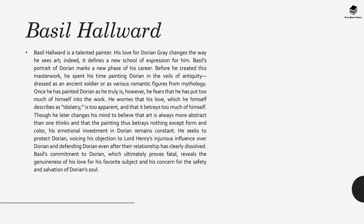The next character of course is Basil Horwood. He's a very talented painter and his love for Dorian Gray changes the way he sees art—it defines a new school of expression for him. Basil's portrait of Dorian marks a new phase in his career. Before this masterwork, he spent his time painting Dorian in the veils of antiquity—dressed as an ancient soldier or as various romantic figures from mythology. Once he's painted Dorian as he truly is, however, he fears he's put too much of himself in his work, and he worries that his love—which he himself describes as idolatry—is too apparent. Though he later changes his mind about exhibiting the portrait, he still maintains a belief that art is always more abstract than one thinks, and his belief shifts from paintings revealing his soul to paintings betraying nothing but form and colour. Throughout the novel, Basil Horwood's emotional investment in Dorian remains constant, and he seeks to protect Dorian, voicing his objection to Lord Henry's injurious influence over him.